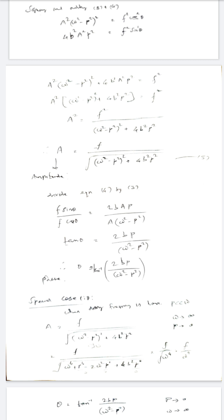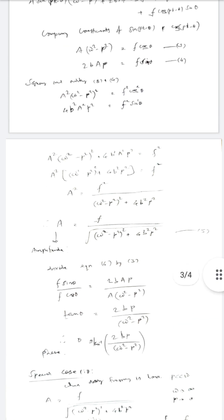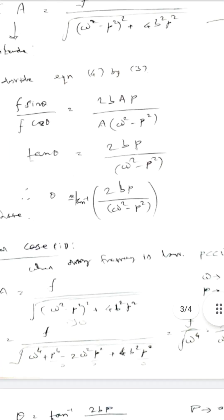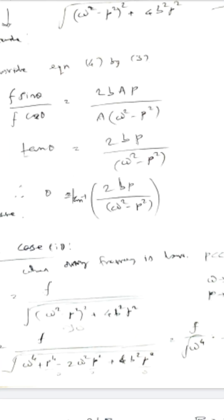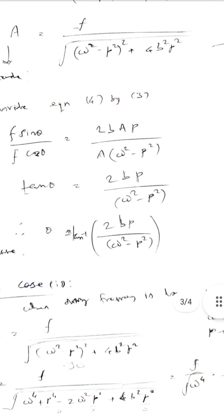Next, the phase angle θ. Dividing f sin θ = 2bAp by f cos θ = A(ω² − p²), the A cancels, giving tan θ = 2bp / (ω² − p²). Therefore, θ = tan⁻¹[2bp / (ω² − p²)].